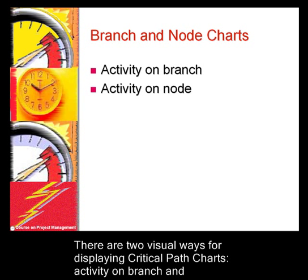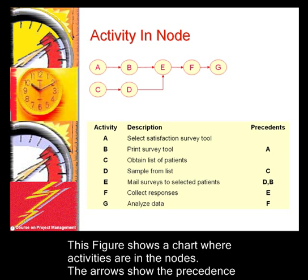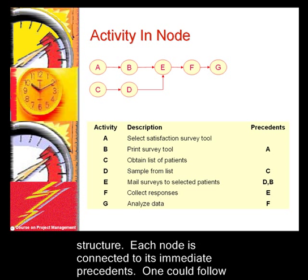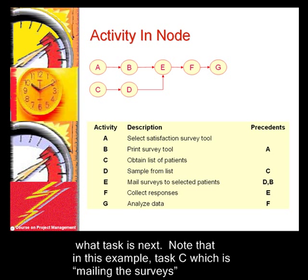There are two visual ways of displaying critical path charts: activity on branch and activity on node. This figure shows a chart where activities are in the nodes. The arrows show the precedence structure. Each node is connected to its immediate precedence. One could follow the arrows backwards to find what is required for each task and forwards to see what task is next.